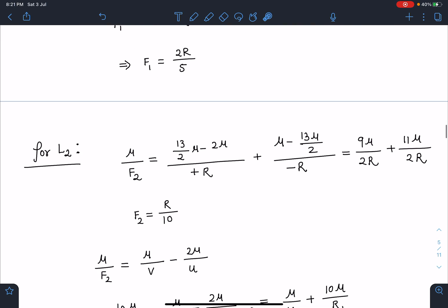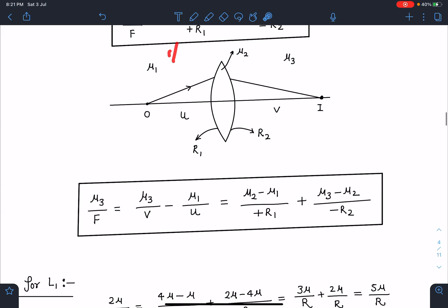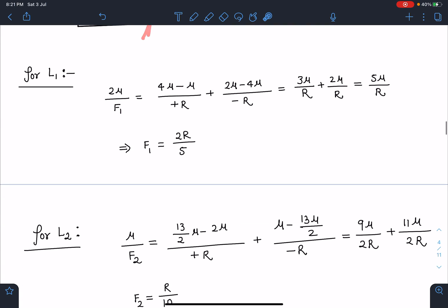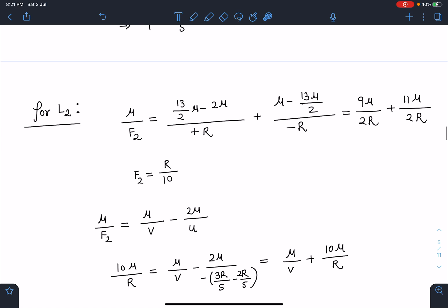For lens L₂, if you calculate this focal length similarly, I can use this formula here. In the diagram we can see the final medium is μ and lens material is 13/2μ and the first medium is 2μ. So final medium by focal length is (lens material - first medium)/R + (final medium - lens material)/(-R). When we simplify this, we get f₂ = R/10.